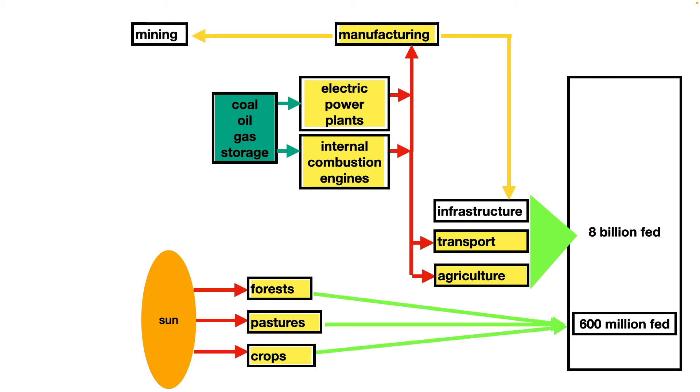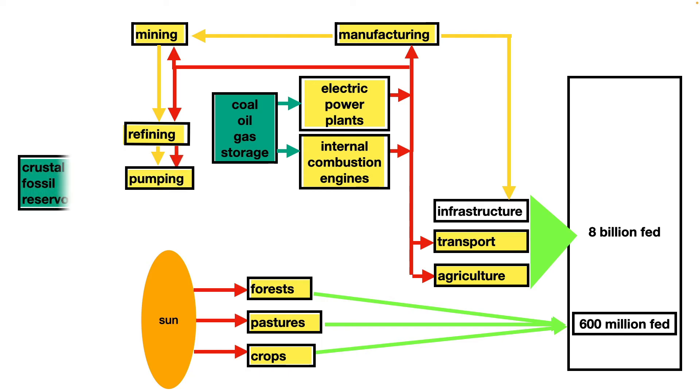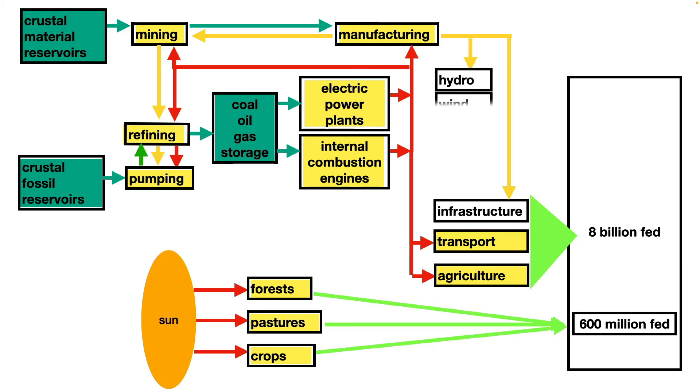Manufacturing can also create flows of machines that perform mining, refining, and pumping. And when energy flows to these machines, fossil reservoirs flow coal, oil, and gas into storage. When more energy flows to mining machines, materials can be extracted from the crust, and they flow to manufacturing. With these additional materials, manufacturing can build energy capture devices: dams, wind turbines, solar collectors, and fission reactors. And these flow 2% of total energy used to produce food into the infrastructure.